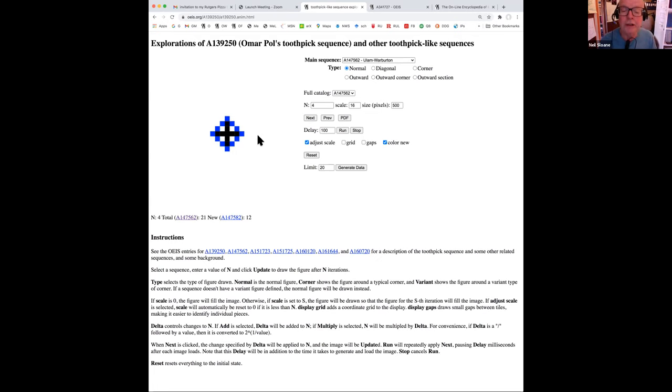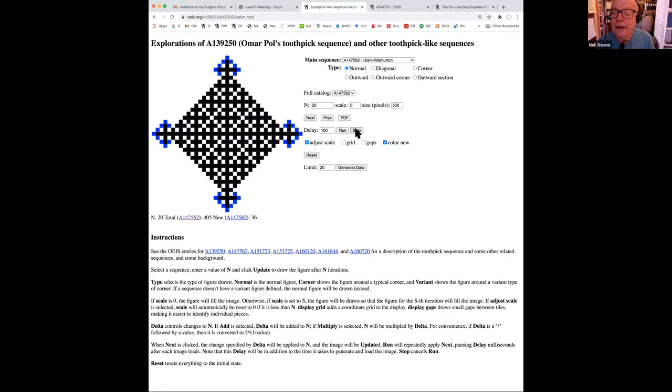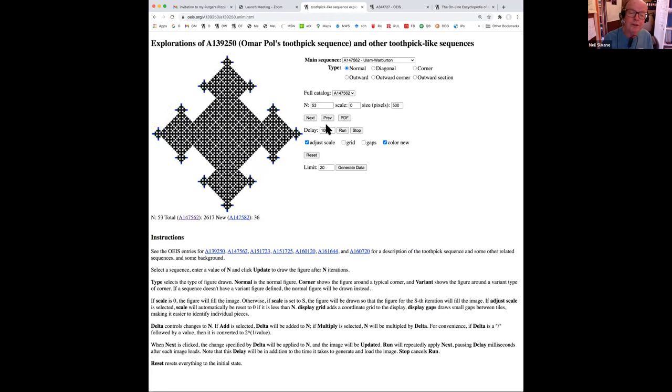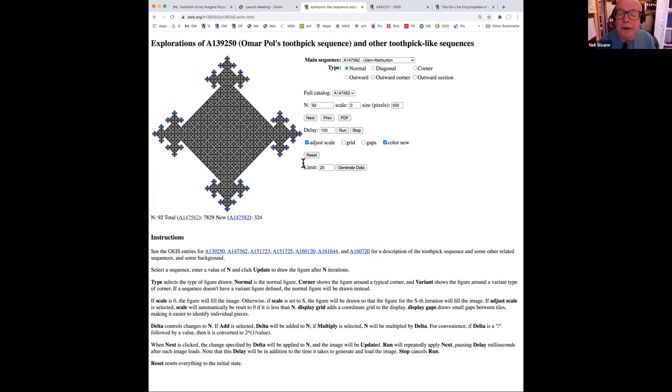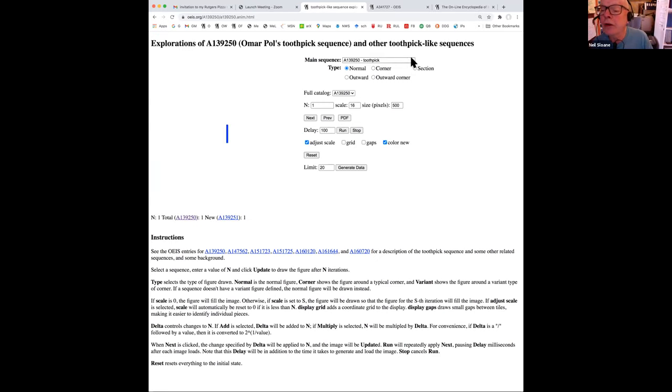This is a very oversimplified model of a particular kind of process, and I began with this one because we can actually analyze this one. You can see that there's a pattern that repeats. Every time we get to a power of two, it grows from the corners in a predictable manner. So this is actually quite easy to analyze. On the other hand, if you change the rules slightly, it gets much more difficult.